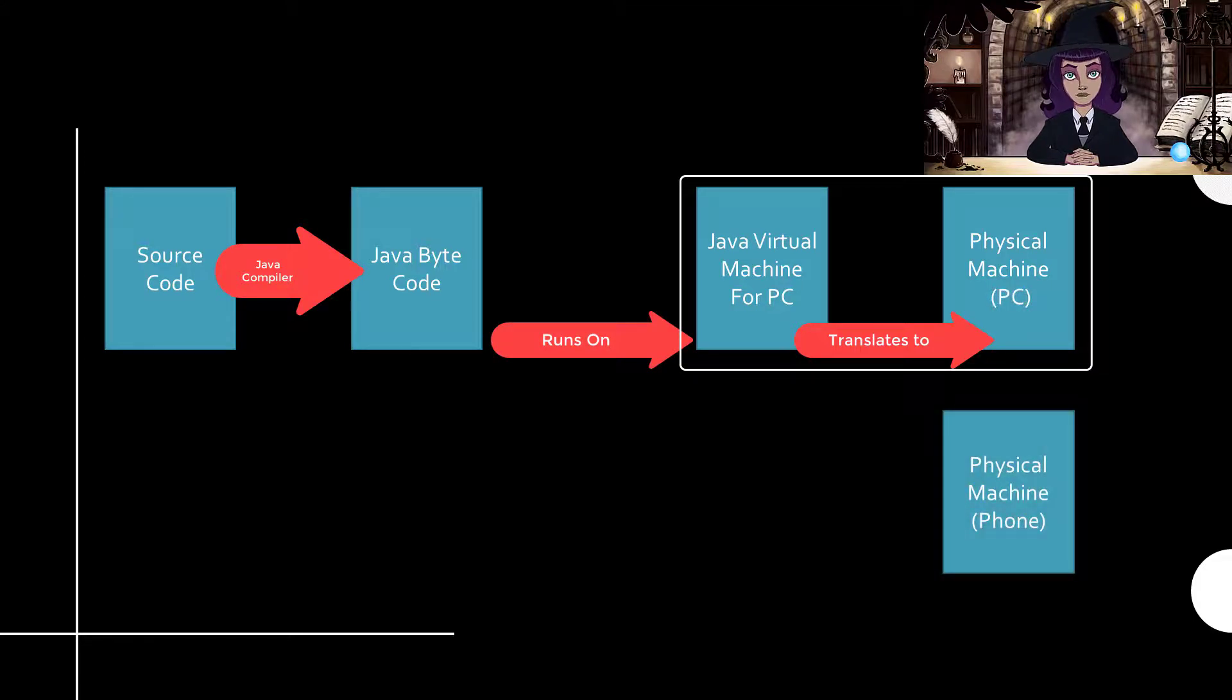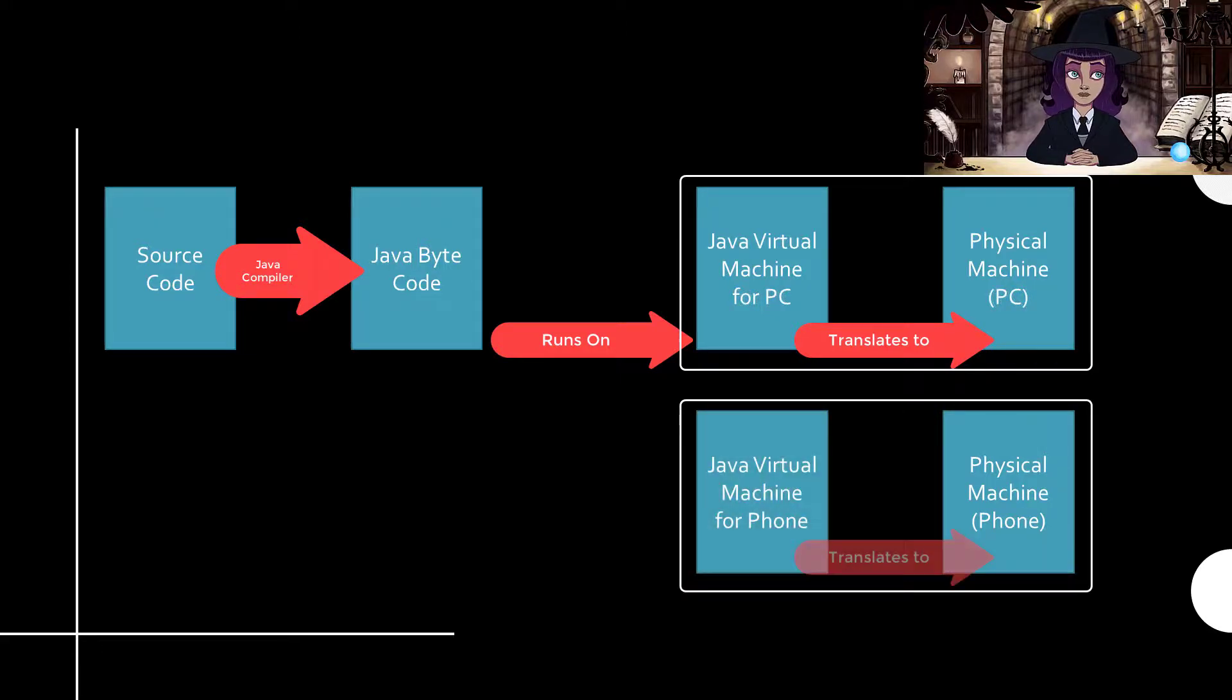Now, suppose we want to run our program on a different kind of machine, say for example, a phone. Well, then we install the Java virtual machine for the phone on that physical machine, and our Java bytecode runs on that physical machine, too. So, the Java virtual machine understands Java bytecode, and understands the language of the machine it's running on, and it translates from one to the other. Maybe that's better?